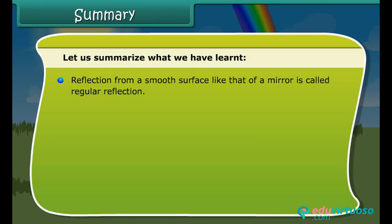Reflection from a smooth surface like that of a mirror is called regular reflection. Reflection from a rough surface like that of a wall is called diffused reflection.